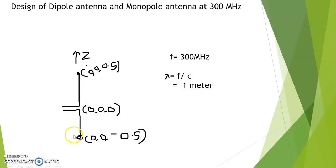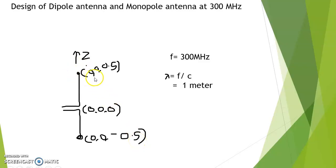This is our dipole antenna, which has two poles. Since we are orienting this antenna along the Z axis, the coordinates of the two poles are (0, 0, -0.5) for the bottom pole and (0, 0, 0.5) for the upper pole. So from -0.5 to +0.5, the total length is almost one meter.